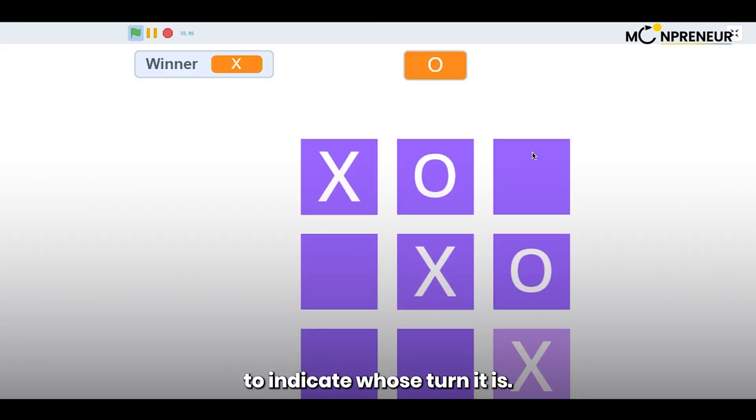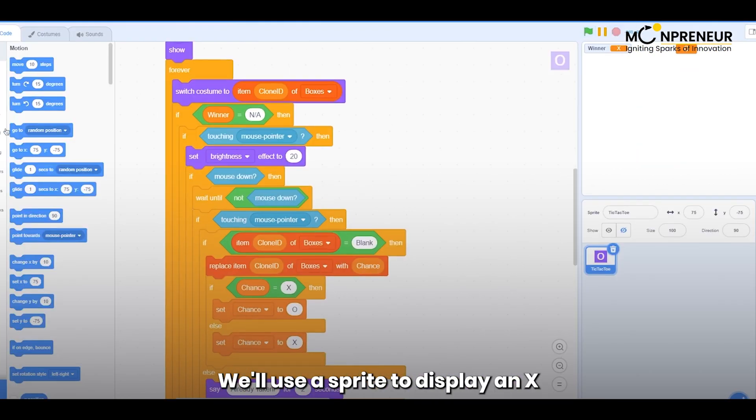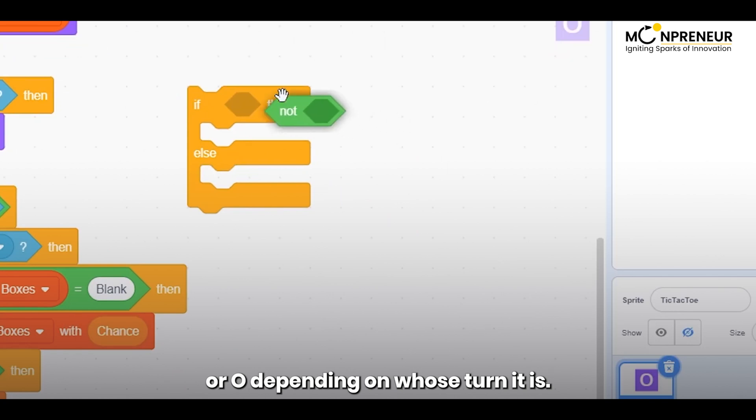Next, we'll add some graphics to indicate whose turn it is. We'll use a sprite to display an X or O depending on whose turn it is.